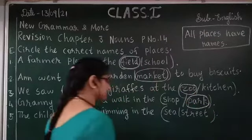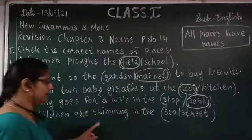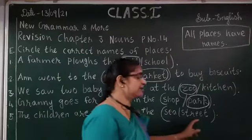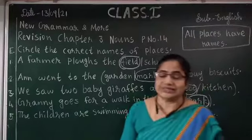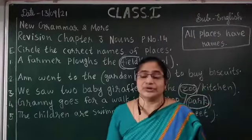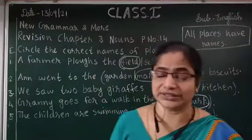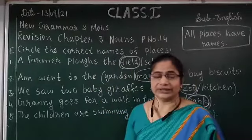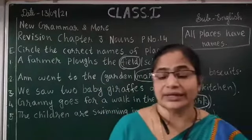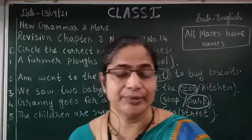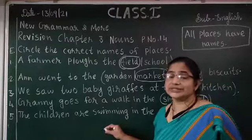The last question: the children are swimming in the sea or a street. Children always go to swim in the sea, pond, or river — water is in the sea, pond, or river. So the correct option is sea.